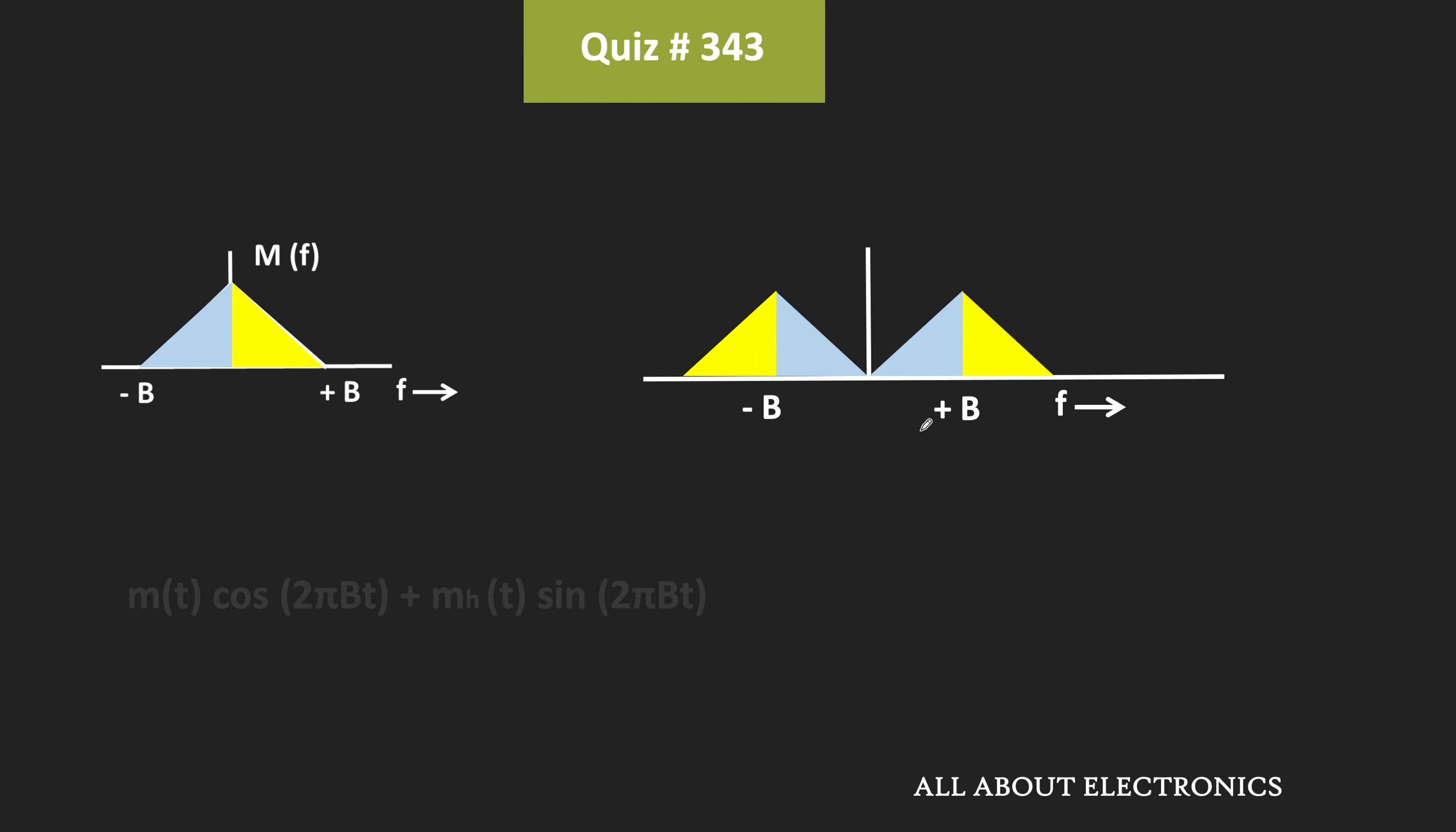But here, since the expression of YT is equal to MT cos 2πBT plus MHT sin 2πBT, that means it is the case of the lower sideband suppressed carrier. That means the upper sideband will get suppressed.